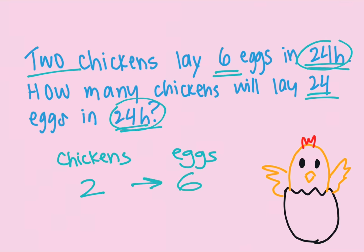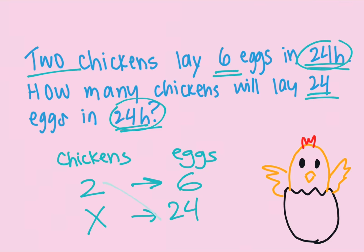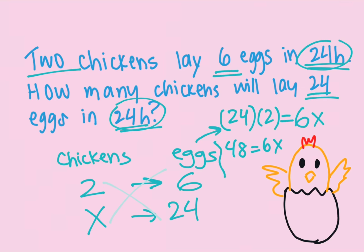In the first statement, two chickens lay six eggs. How many chickens — that's our x — will lay 24 eggs? This is how you put the question into a proportion. Now you use the cross-multiplication method: 2 multiplied by 24 equals 6 multiplied by x. So 24 multiplied by 2 is 48, giving us 48 = 6x, and x equals 48 divided by 6.